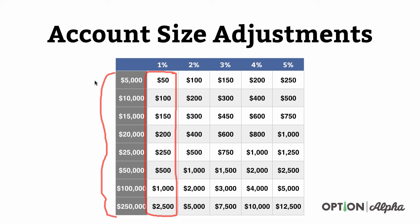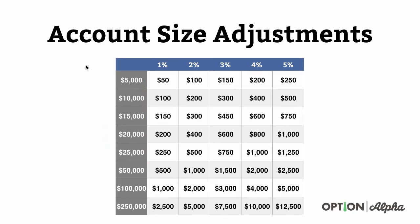Your dollar allocation should go up. As your portfolio grows, your dollar allocation goes up, but it's the same percentage of your equity that you're still risking with each individual trade. This is how you're able to scale and grow.